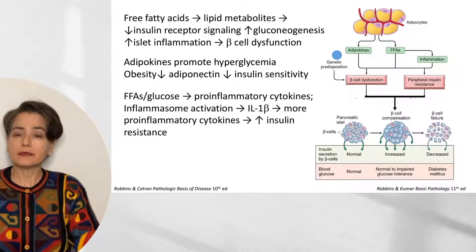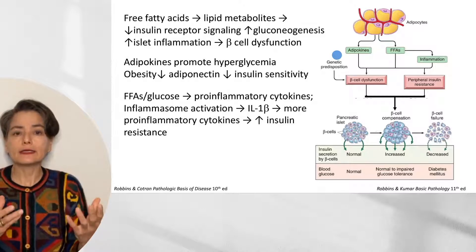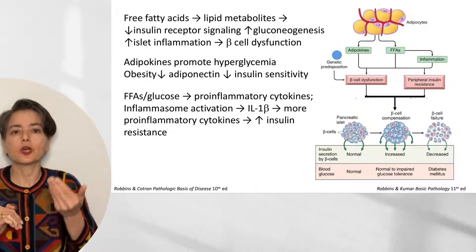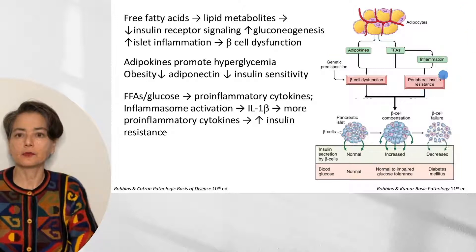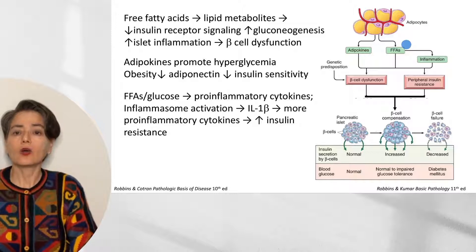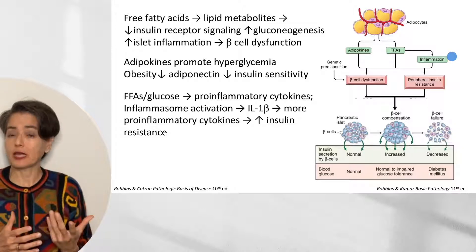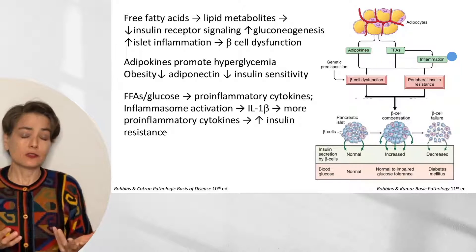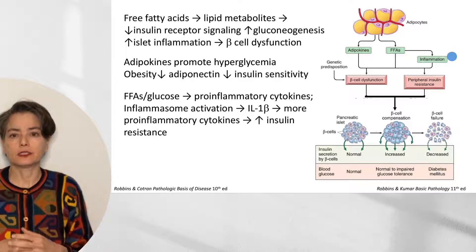Others, like adiponectin, typically increase insulin sensitivity — so adiponectin is beneficial. However, adiponectin levels decrease as a patient becomes obese. Obese patients will have less adiponectin, less insulin sensitivity, contributing to peripheral insulin resistance. Free fatty acids combined with high glucose levels cause release of pro-inflammatory cytokines. These pro-inflammatory cytokines activate the inflammasome, which releases interleukin-1-beta. That interleukin-1-beta causes release of more pro-inflammatory cytokines, leading to increased insulin resistance.